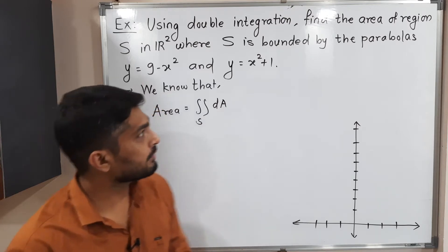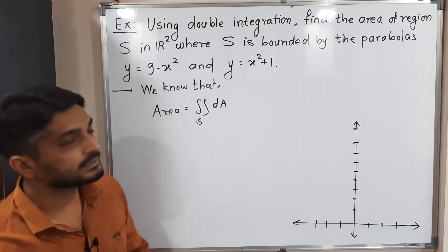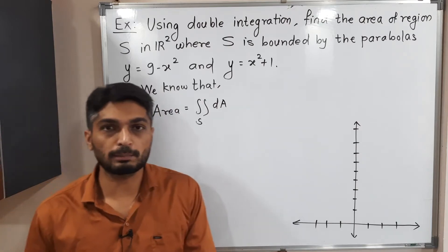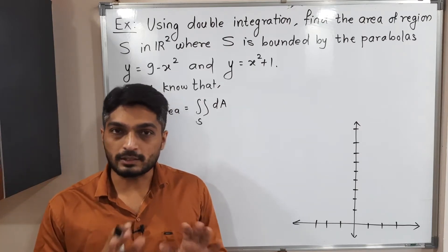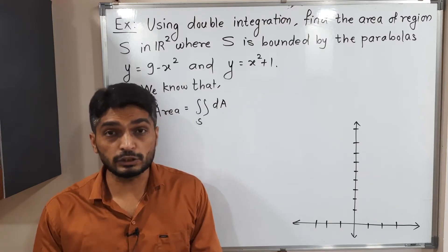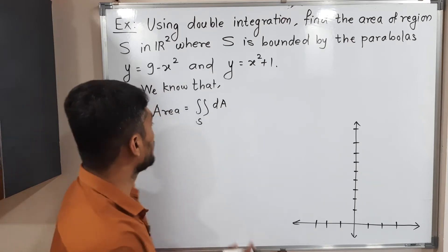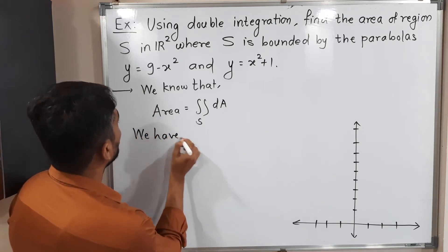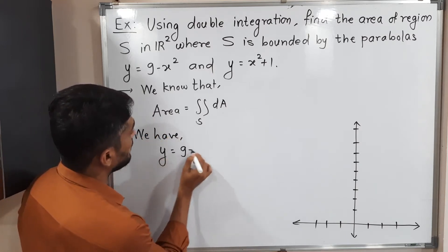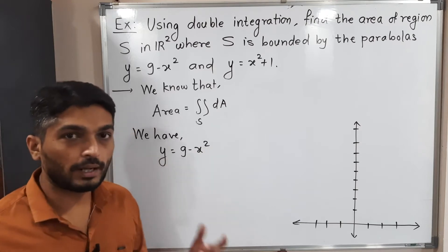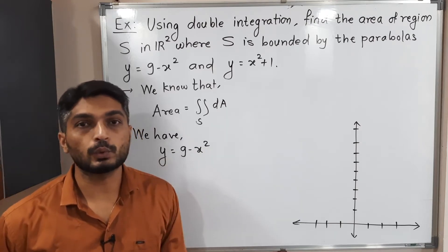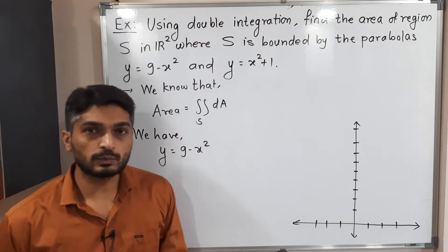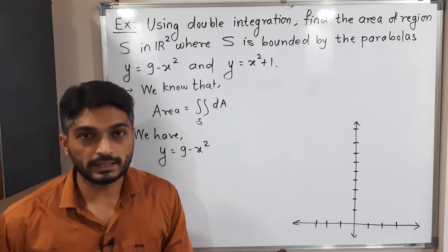Let us find the region. The region is bounded by y = 9 minus x squared and y = x squared plus 1. Let us draw these curves first, then we will find the region bounded by them. We have y = 9 minus x squared — the power of y is 1 and the power of x is 2, so it represents a parabola.